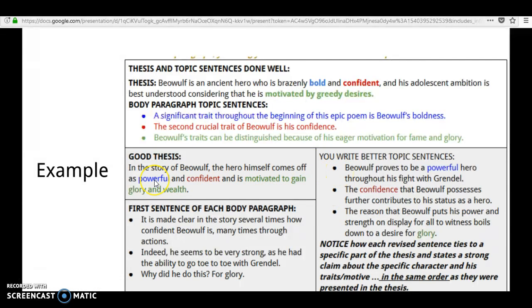Here are some examples. To write a topic sentence for the reasoning for powerful, we could write: Beowulf proves to be a powerful hero throughout his fight with Grendel.